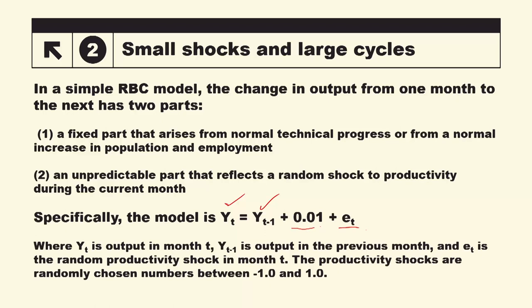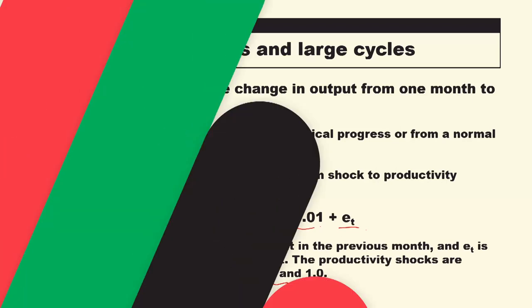E_T is a random productivity shock in month T. The productivity shocks are randomly chosen numbers between minus one and plus one. The values of E_T are computer-generated randomly, and this range is defined as minus one to plus one.